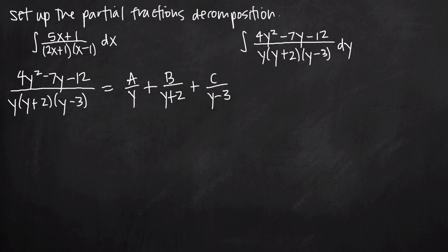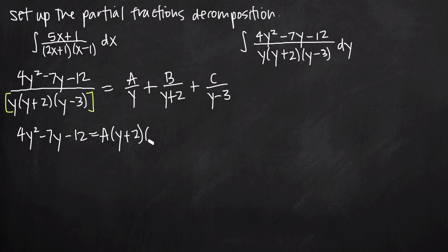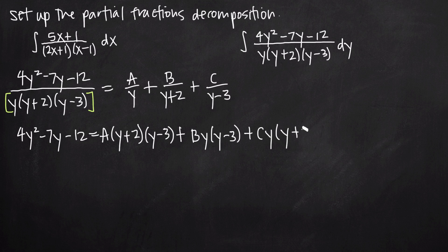Following the same process as the last example, we multiply both sides of this equation by the denominator from the left hand side. On the left we're just left with the numerator. On the right, the y factor cancels with A leaving a times y plus 2 times y minus 3; the y plus 2 term cancels with B leaving b times y times y minus 3; and the y minus 3 term cancels with C leaving c times y times y plus 2.